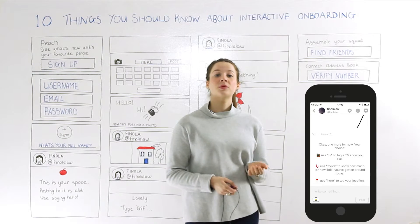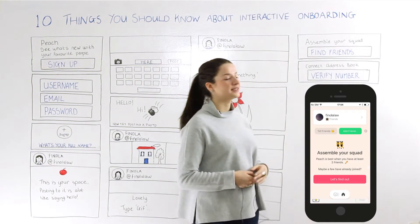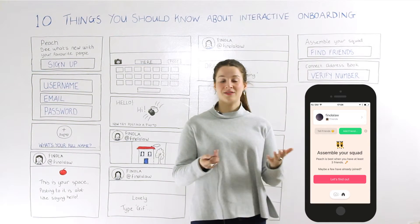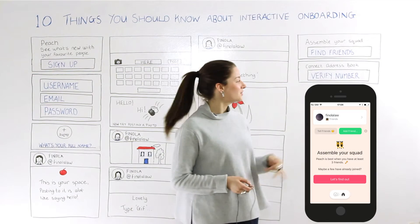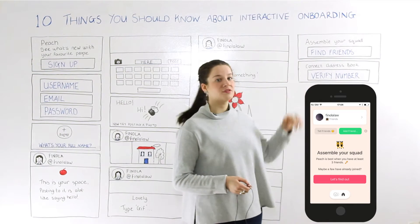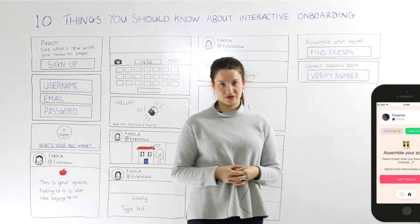Now that you have your account set up, Peach invites you to find your friends, assemble your squad, and even tell a friend about the app. You do this through verifying your number and then connecting through your address book.